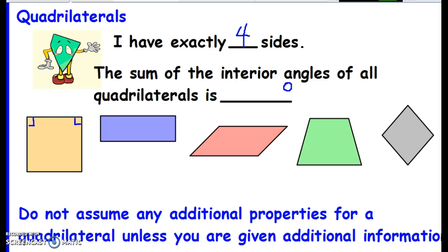Well, we know that squares all have 90 degrees. So if I take 4 times 90, I get 360 degrees.